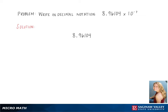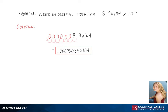Here we are writing 8.96104 times 10 to the negative 7th in decimal notation. Our first step is to take the decimal place and move it over 7 spots to the left because the exponent is negative. Doing so, we have a new decimal place and we fill all the open spaces with zeros. This gives us 0.0000000896104 as our final answer.